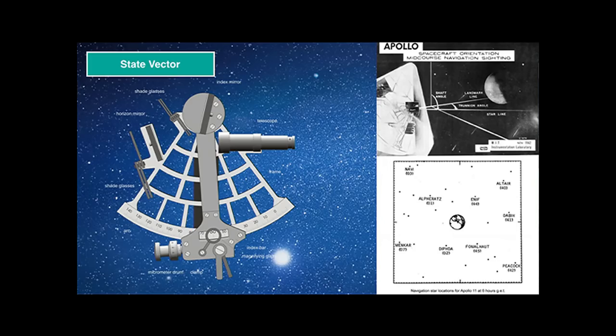The whole optics hardware in the command and service module can be moved to point in the general direction of Earth or Moon. With program 52, we command the Apollo guidance computer to rotate the spacecraft to point one axis of the sextant — the so-called landmark line of sight (LLOS) — to the nearest body. The astronaut then uses the optics to exactly align the horizon to the LLOS. With a telescope, the astronaut looks for one of the known stars, points the star line to it, and lets the Apollo guidance computer read the trunnion and shaft angle. Repeating this one or more times in a different plane gives a three-dimensional position of the vehicle in space.